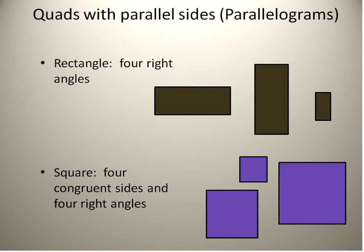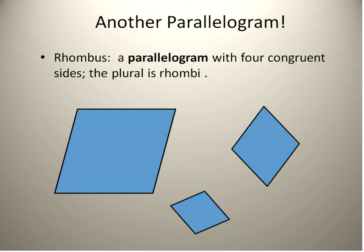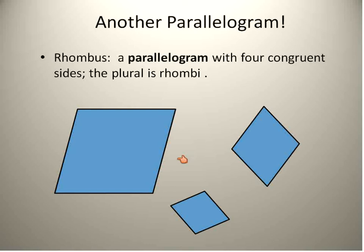We're kind of building on each other. There's one more type of parallelogram we're going to talk about, and that is a rhombus. A rhombus is a parallelogram with four congruent sides. All four sides are the same measurement, and it has two sets of parallel sides. A square is a kind of rhombus, but most rhombi look a little off-kilter — they usually don't have all 90-degree angles. It is a special kind of parallelogram where all four sides are congruent.